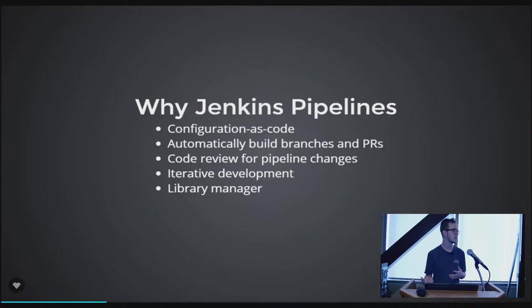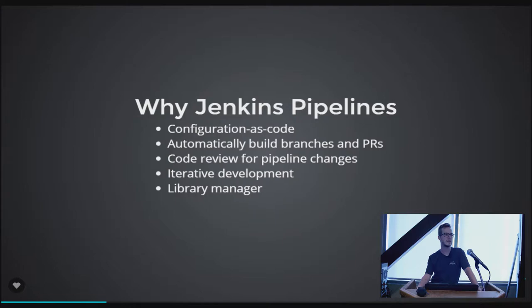With pipelines, you get code review and history, and it's easy to do iterative development — make a branch, test some changes, Jenkins automatically picks up that branch and runs the new pipeline changes. If it looks good, you're set. The library manager is the same concept: if multiple projects run essentially the same pipeline, you move that duplicated or complex code into a library and your pipeline just calls that instead.